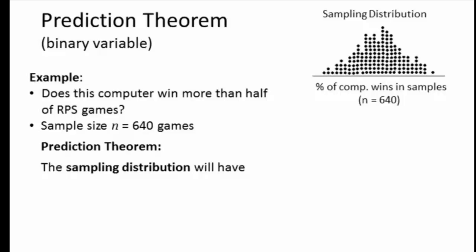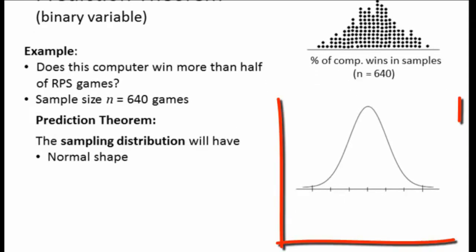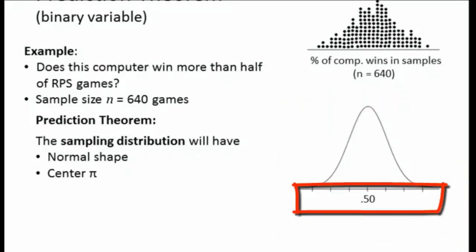It tells us three things. The sampling distribution will always have a normal shape, and that's why we draw this model of a sampling distribution having the bell shape. Notice how it matches the dot plot above it. The center will be π. π is the population percentage. In this case, if we're asking whether the computer wins more than half of its RPS games, then we're going to say, well, what if it only won half? What if it was just a typical rock-paper-scissors player? Then we'd have 50% at the center.